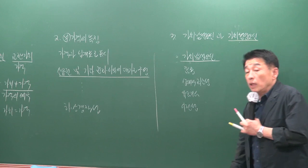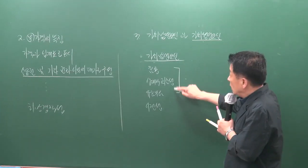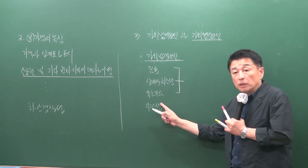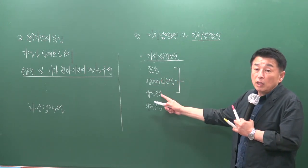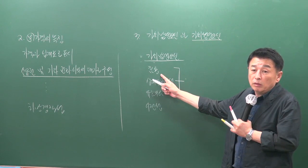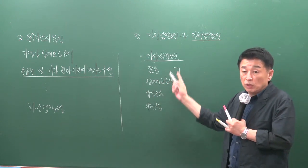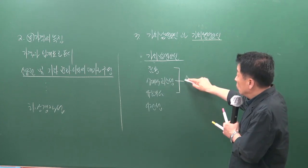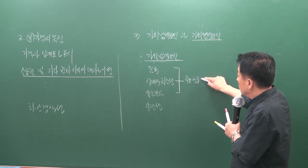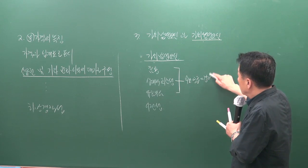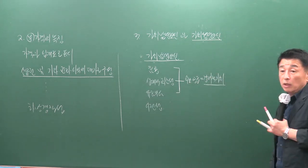가치발생요인에는 네 가지가 있으며, 시험에는 주로 상위 세 가지가 출제되었습니다. 세 가지 모두 충족되어야 가치가 발생할 수 있으며, 한 가지만 있어도 충족된다고 하면 틀린 지문입니다. 이 요인들은 결국 수요와 공급을 얘기하며, 이를 통해 경제적 가치가 결정됩니다.